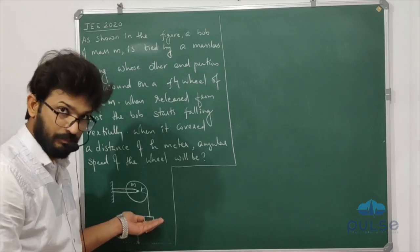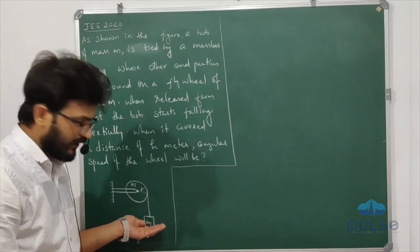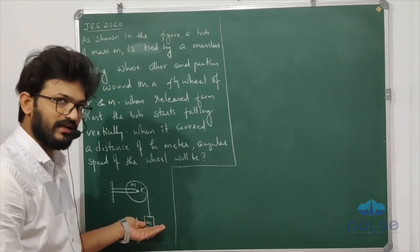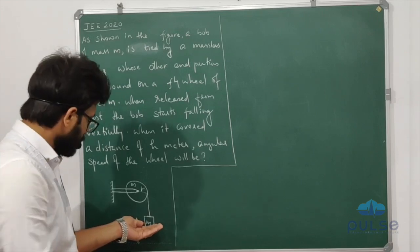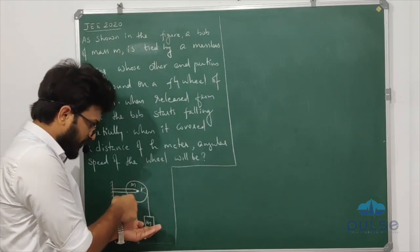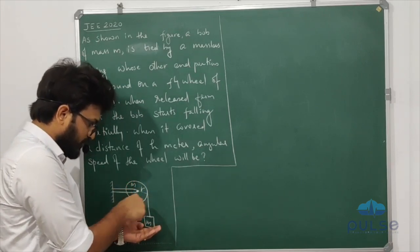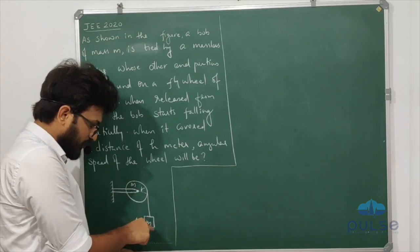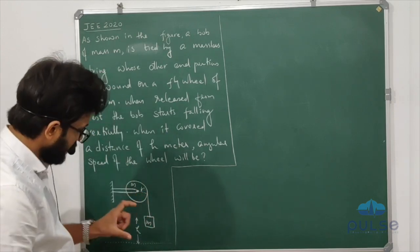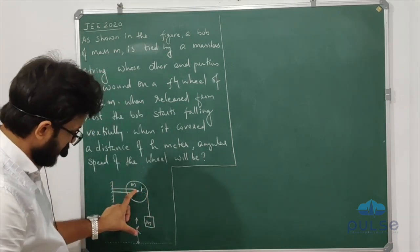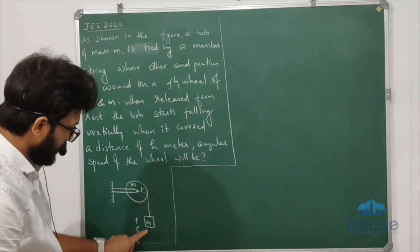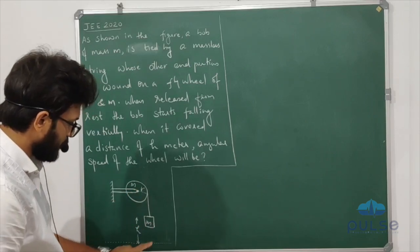This is the system. This system has energy. The flywheel has mass, and the bob also has mass. The flywheel has potential energy, and this mass also has potential energy.